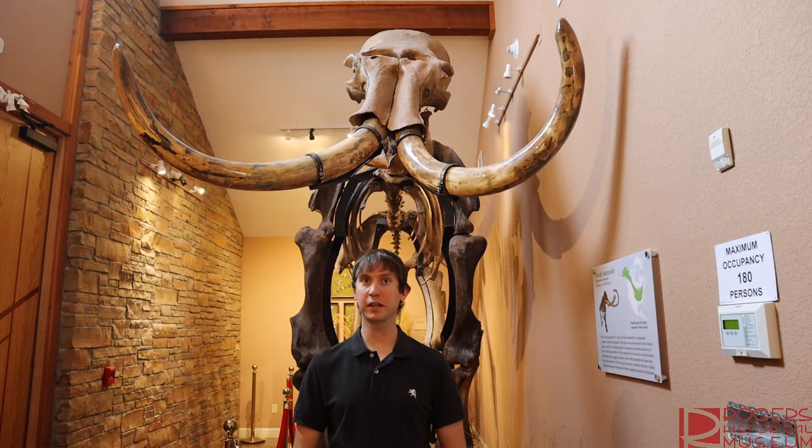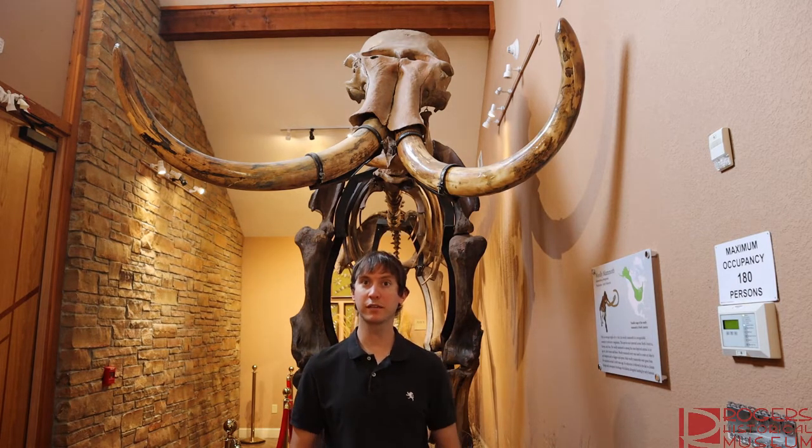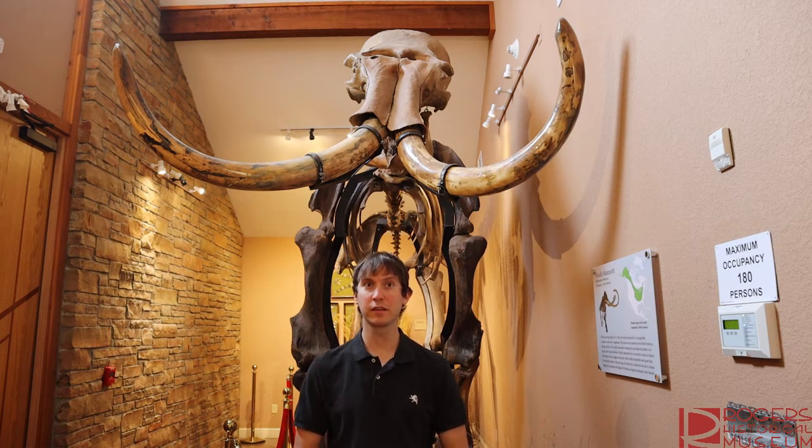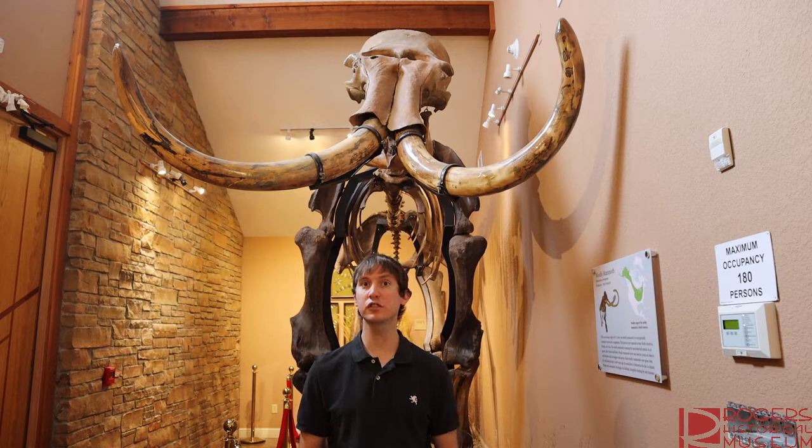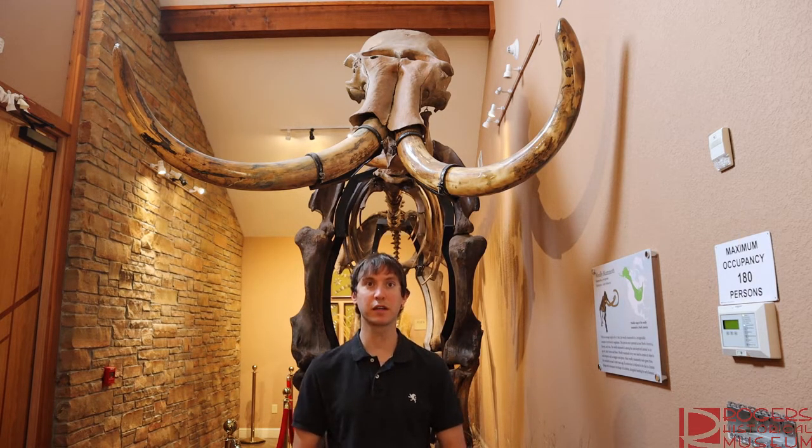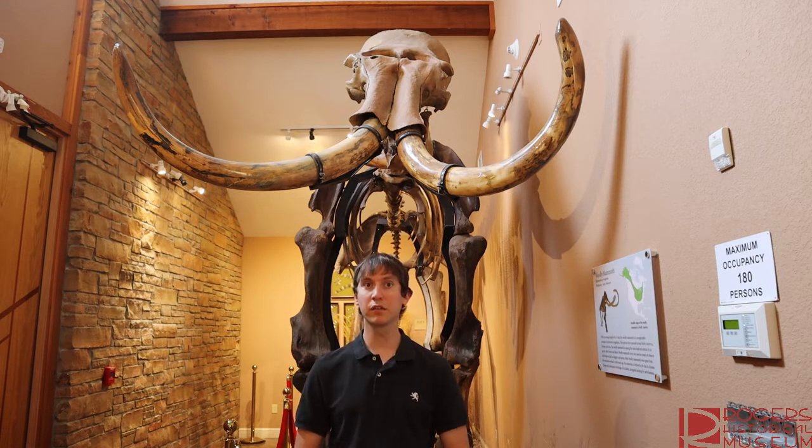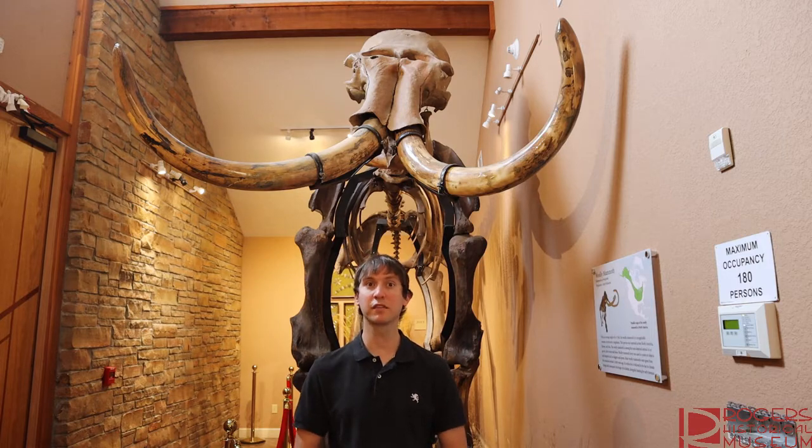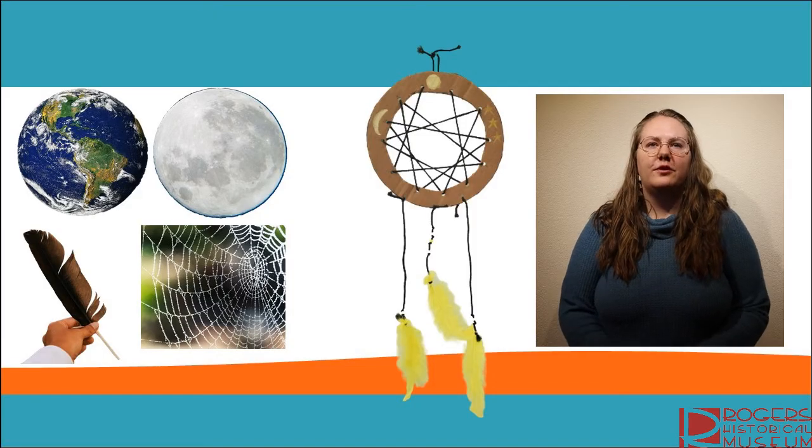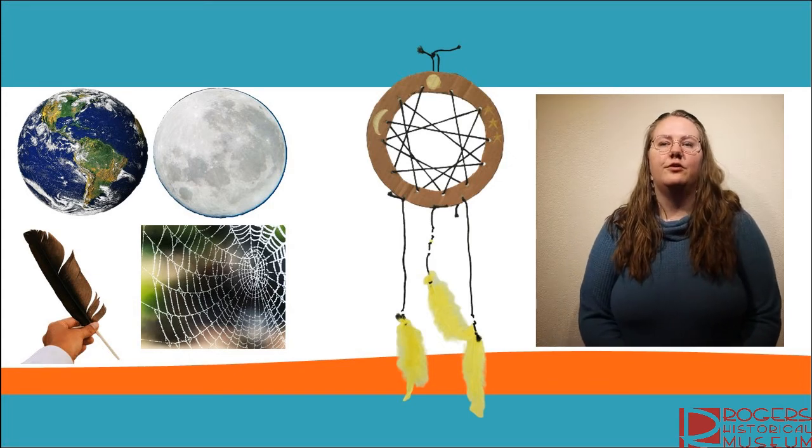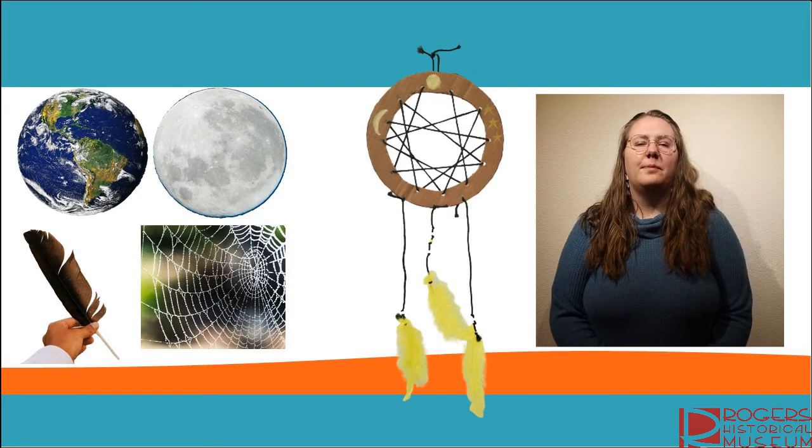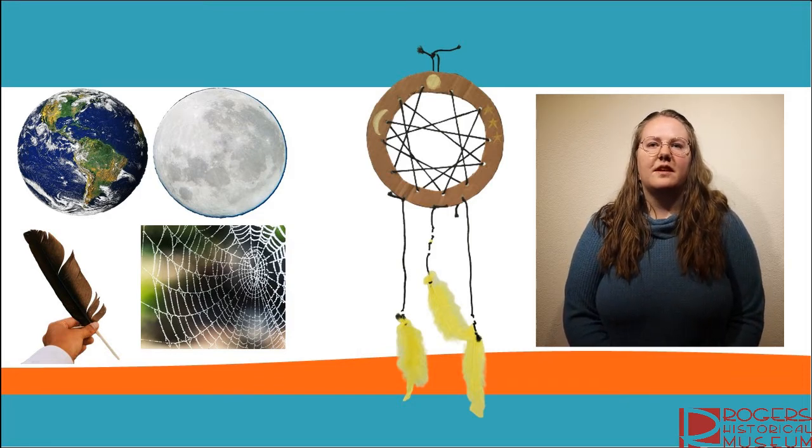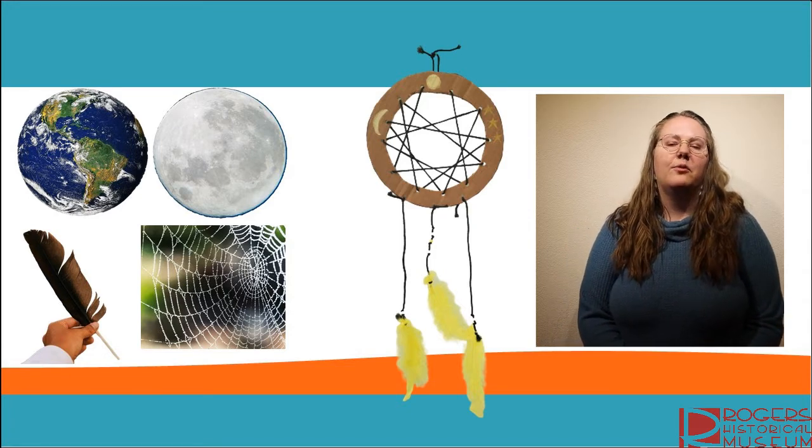Stories from the Ojibwe tell the origins of the Dreamcatcher as a representation of a web created by the Spider Woman Asabakashi that catches bad dreams and holds them until the sun comes up. The bad dreams are then destroyed by the sun's light. The feathers hanging down from the Dreamcatcher let the good dreams descend as if they were climbing down a ladder to the person sleeping below, allowing them to have good dreams. Women of the Ojibwe make Dreamcatchers to help aid Asabakashi since the people are so spread out throughout the continent now and Asabakashi was not able to tend to all of them. The wooden round shape of the Dreamcatcher can represent the shape of the earth or circular path which the sun travels every day. The webbing of the Dreamcatcher represents the spider's web and was often made of string or sinew which are connecting fibers that connect muscles and bones together. Finally, the feathers can represent different things such as an owl's feather being symbolic of wisdom or an eagle's feather representing courage.